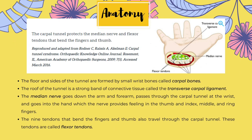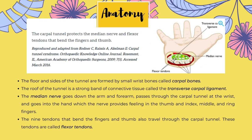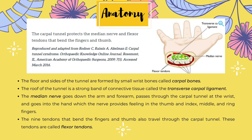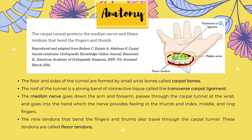The nerve provides feeling in the thumb, index, middle and ring fingers. The nerve also controls the muscles around the base of the thumb. The nine tendons that bend the fingers and thumb also travel through the carpal tunnel. These tendons are called flexor tendons.